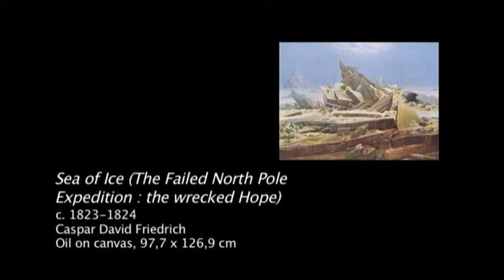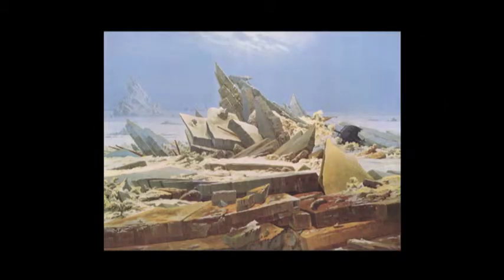There are certain pictures of Friedrich that are much more dramatic, like this one — Sea of Ice, which is a good description of what it is. Very often you will see in brackets near the title: 'the failed North Pole Expedition' or 'The Wrecked Hope' — hope being the name of a specific ship. Apparently this is not an accurate title, though it is a good description of what we see.